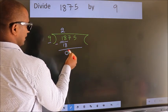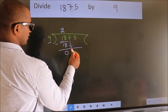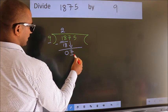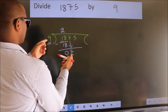We get 0. After this, bring down the beside number. So, 7 down. Here we have 7. Here 9. 7 is smaller than 9.